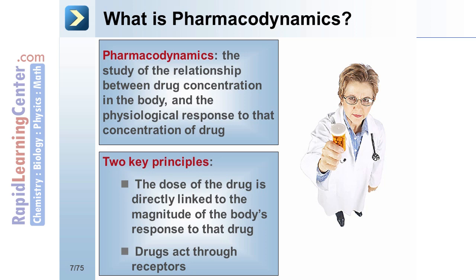There are two key principles to keep in mind. First, the dose of the drug is directly linked to the magnitude of the body's response to that drug. A basic premise underlying pharmacology is that for a given dose of drug, there will be a given biological response that is directly proportional to the given dose.